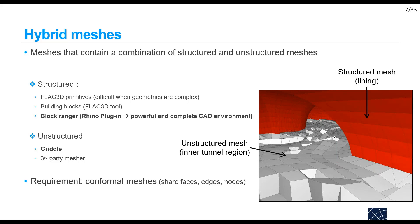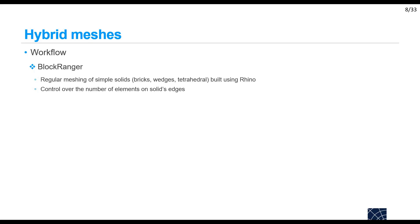For the structured mesh you can use FLAC3D primitives, but this becomes complicated when geometries are complex, or you can use Building Blocks which is an integrated FLAC3D tool, or use Blockranger which is a Rhino plugin — in which case, as with Griddle, you benefit from the complete CAD environment of Rhino. For the unstructured mesh you can use Griddle or a third-party mesher. The only requirement is that you have conformal meshes, meaning that at the boundary between the unstructured and structured mesh you share faces, edges, and nodes.